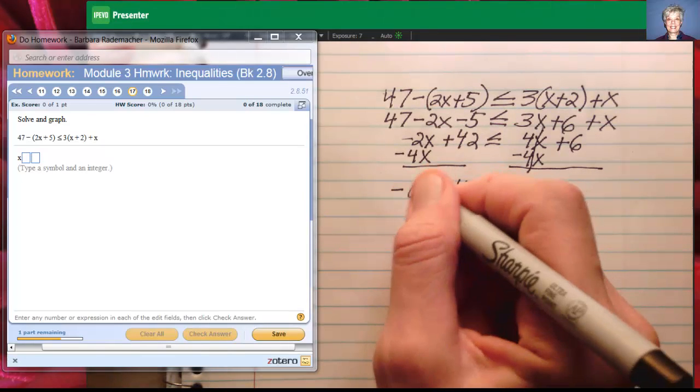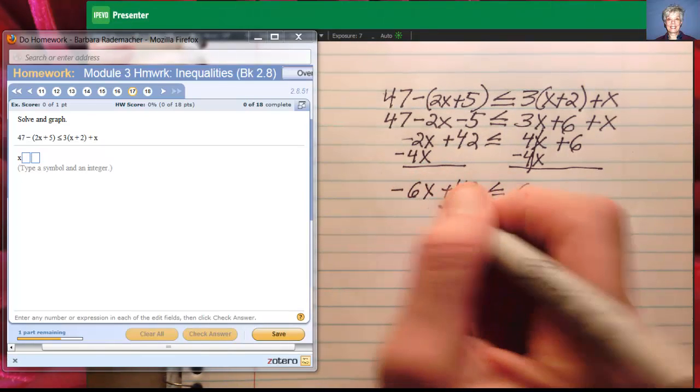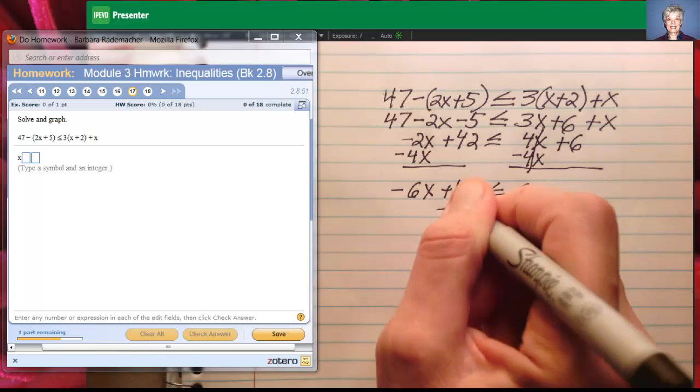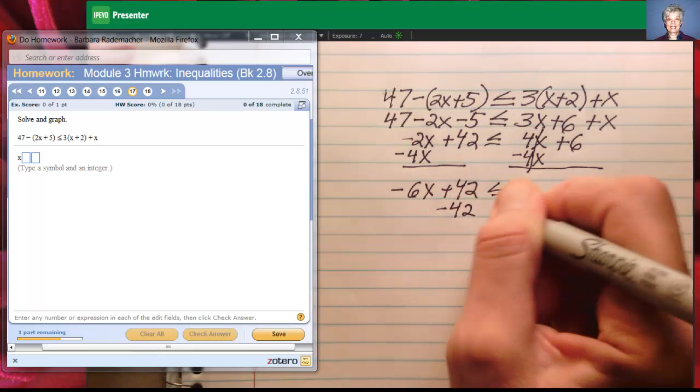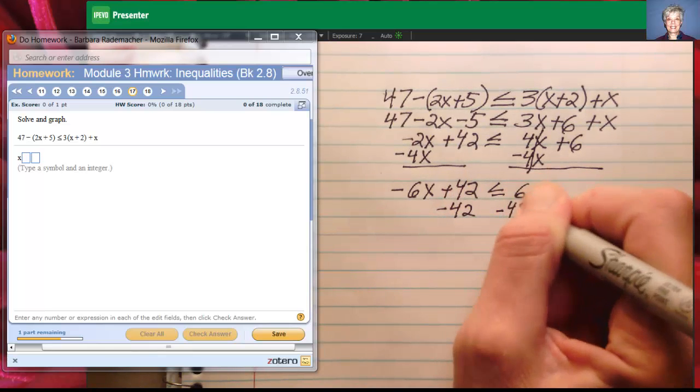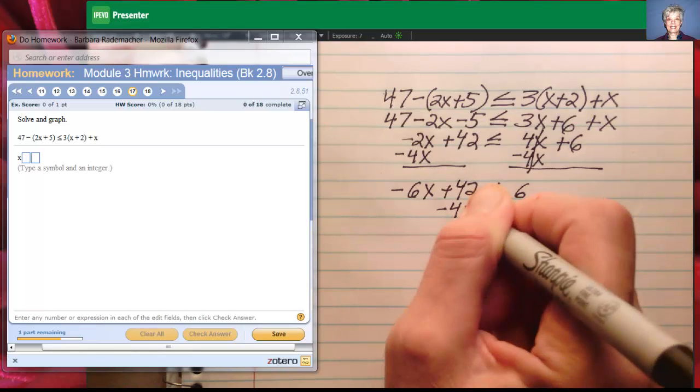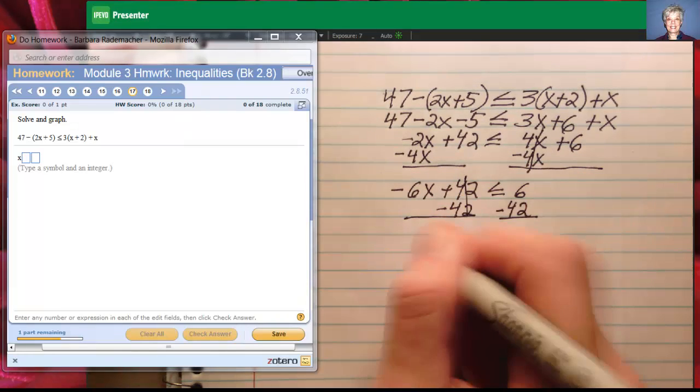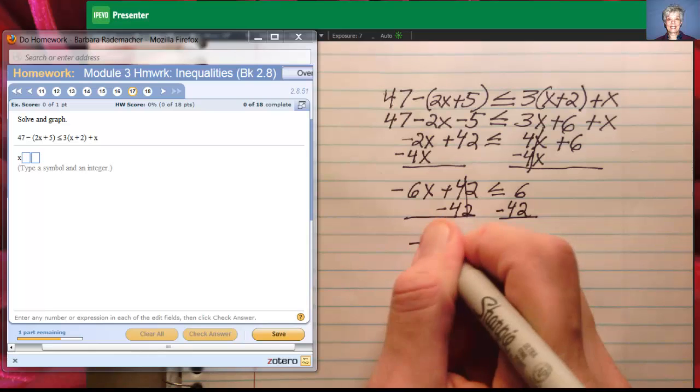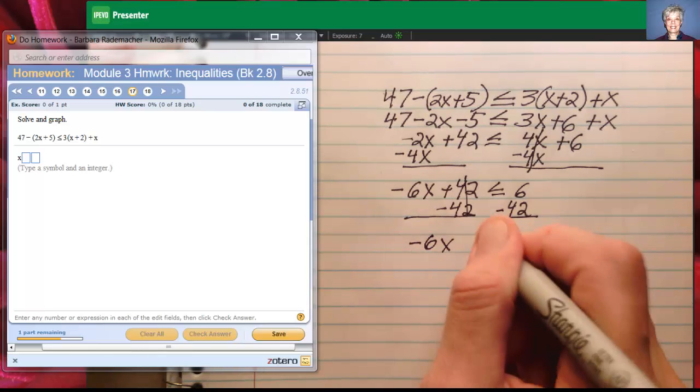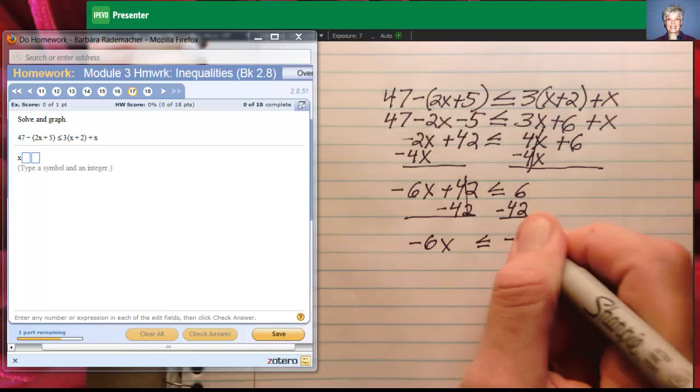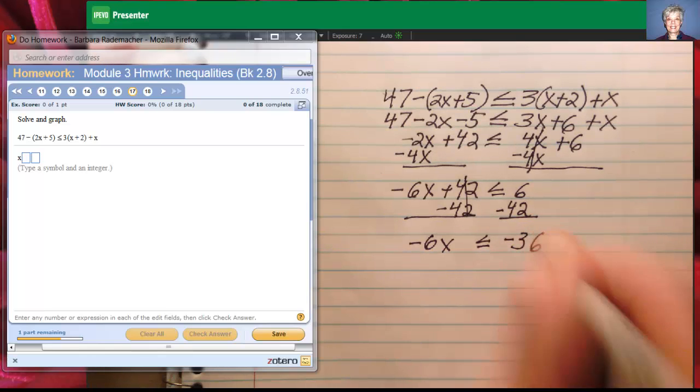All I have to do now is get negative 6x by itself. So I'll subtract 42 from both sides or add a negative 42. Same thing. I'll have negative 6x is less than or equal to negative 36.